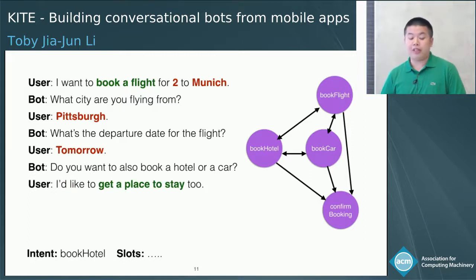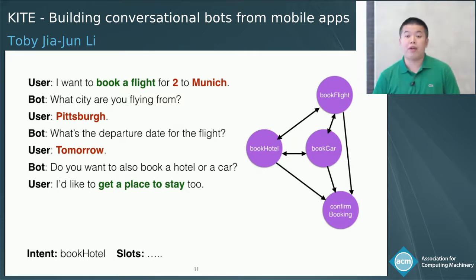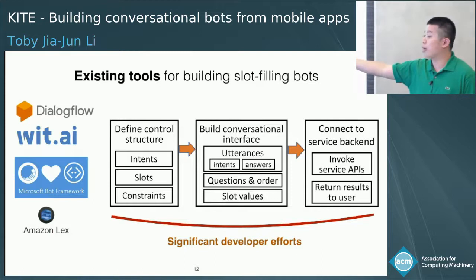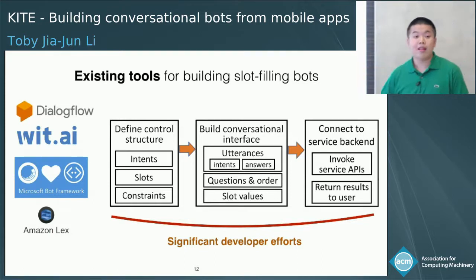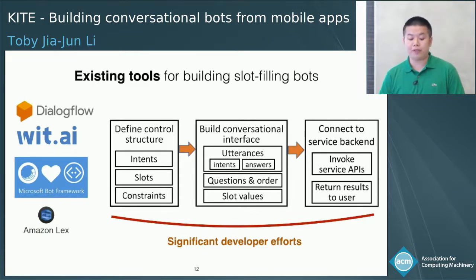Then the bot needs to decide which next intent to go to. It will ask the user a question and detect the next intended action — book hotel. There are many popular tools for building slot-filling bots, such as Google Dialogflow, Wit.AI by Facebook, Microsoft Bot Framework, and Amazon Lex. These tools require significant developer efforts, where developers have to manually specify intents, slots, constraints, and also provide prompt questions, sample utterances, and slot values before they can connect the bot to the backend.